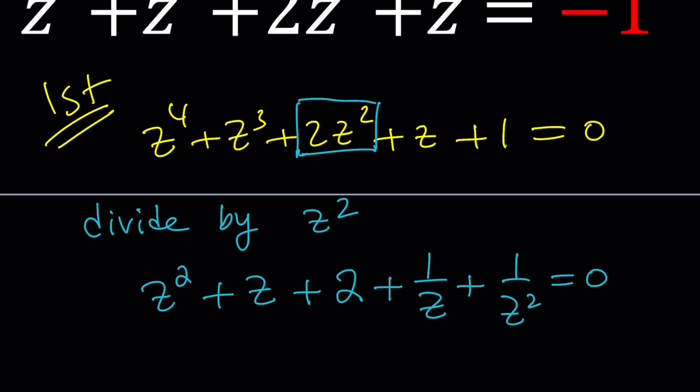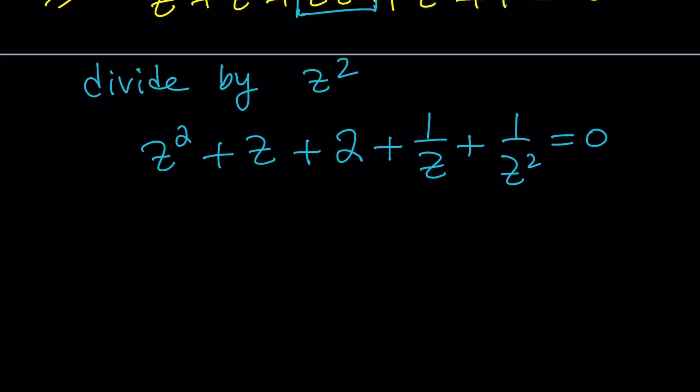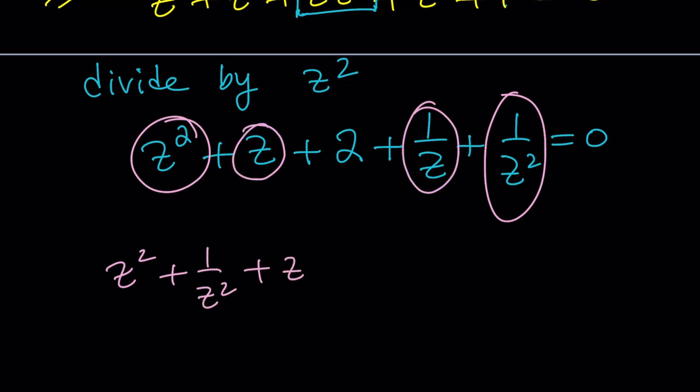This kind of turns the polynomial into a rational equation, but a good rational equation. Because if you look at this carefully, z^2 is going to pair up with 1 over z^2. And then z is going to pair up with 1 over z. And 2 is going to be lonely, too bad, but that's okay. It's a constant. So what can you do?